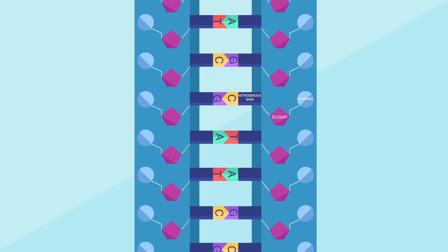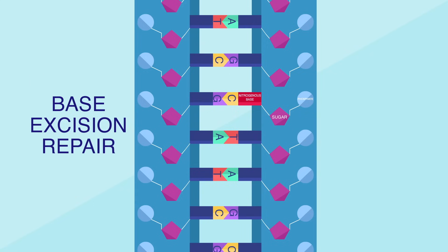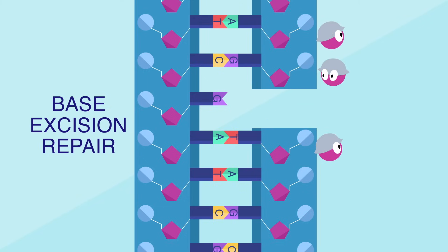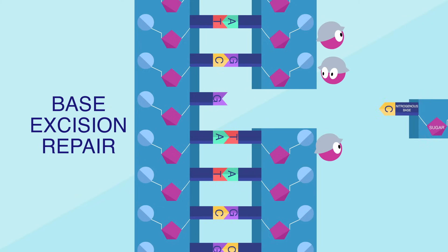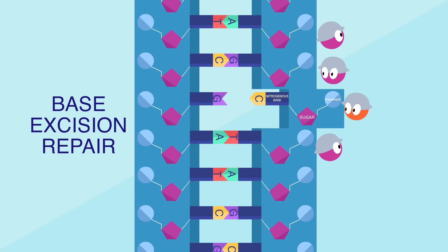But the cell also has more general repair pathways. If just one base is damaged, it can usually be fixed by a process called base excision repair. One enzyme snips out the damaged base, and other enzymes come in to trim around the site and replace the nucleotides.